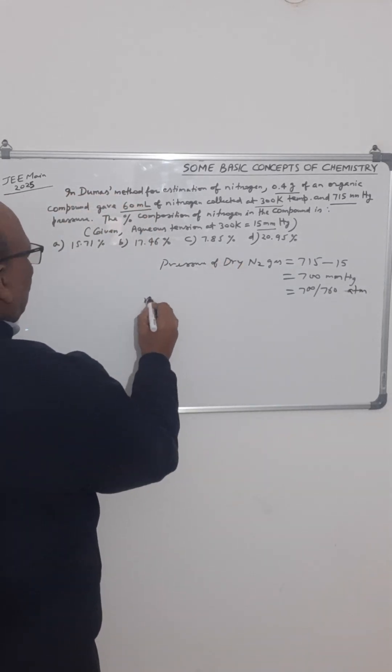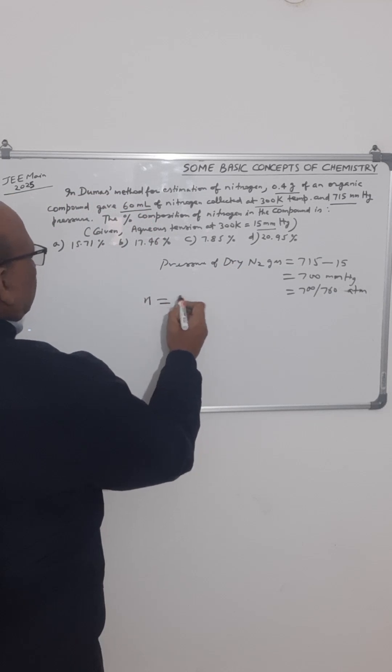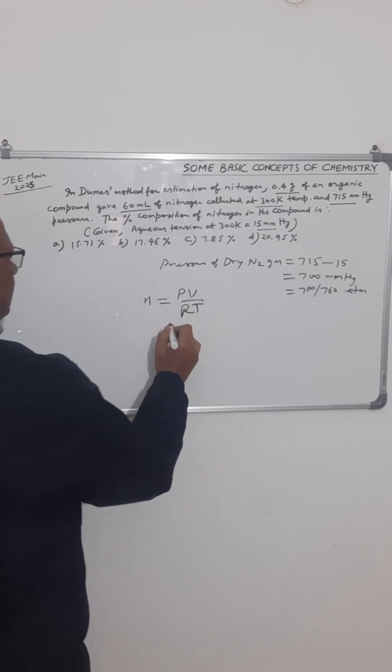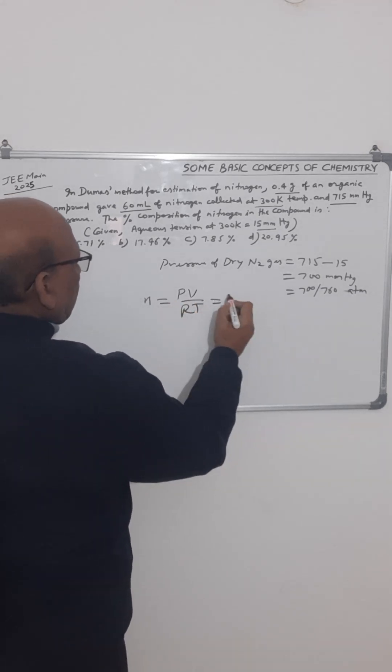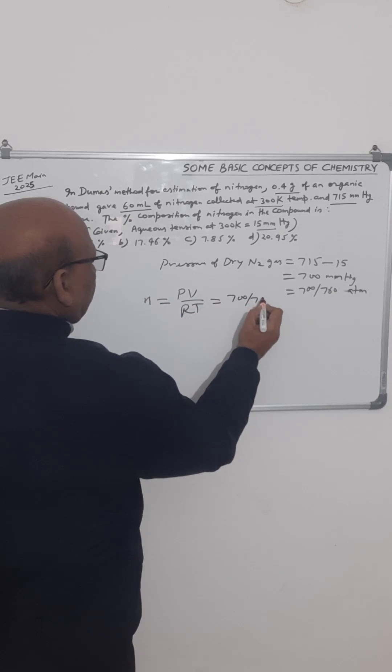Now we can find the number of moles of nitrogen gas collected. Number of moles is PV upon RT by the ideal gas equation. Now pressure is 700 divided by 760.